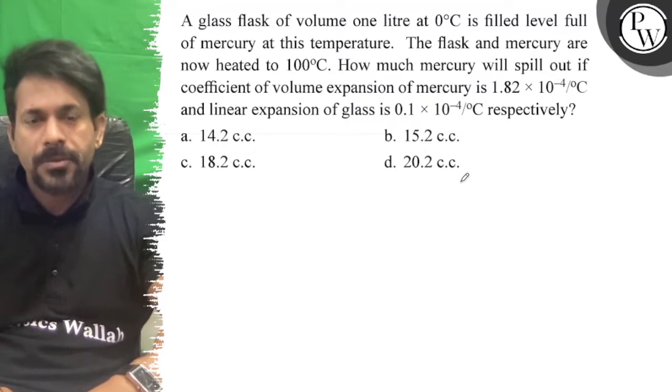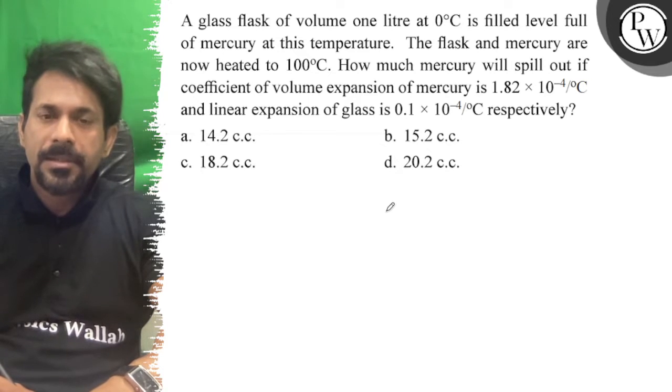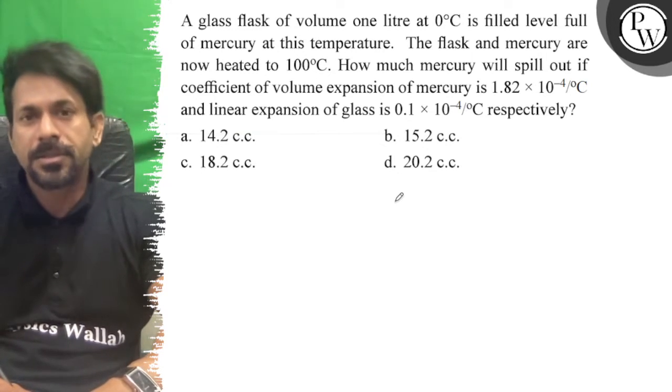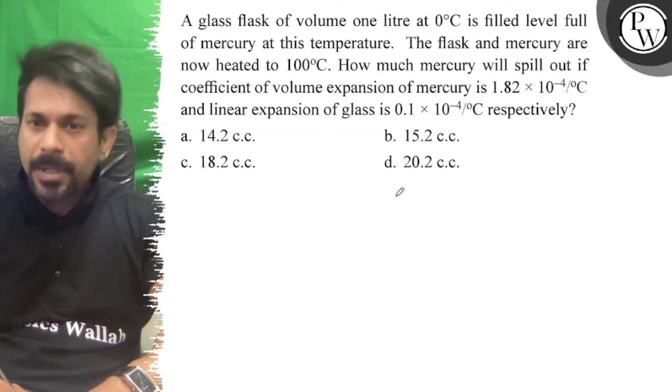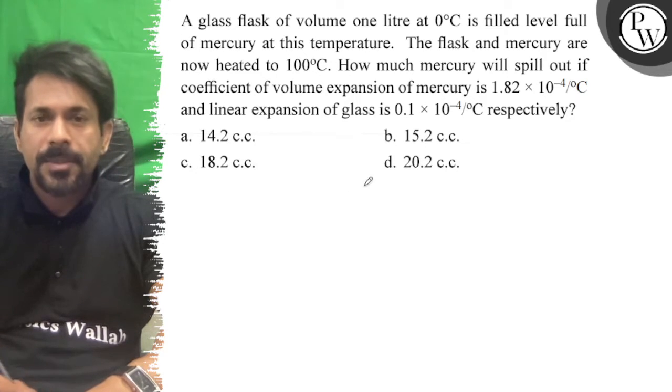Hello, let's see the question. A glass flask of volume 1 liter at 0 degree celsius is filled level full of mercury at this temperature. The flask and the mercury are now heated to 100 degree celsius. How much mercury will spill out if the coefficient of volume expansion of mercury is 1.82 × 10^-4 and linear expansion of glass is 0.1 × 10^-4?